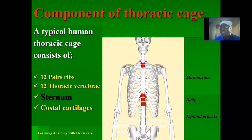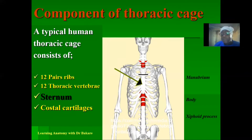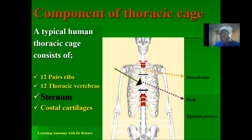Going further, we have the sternum, also referred to as the breast bone — an elongated bone seen in the anterior part of the thoracic cage. The sternum is subdivided into three sub-regions: the superior part is called the manubrium, inferior to the manubrium is the body of the sternum, and inferior to the body is the xiphoid process. So we have these three regions of the sternum.